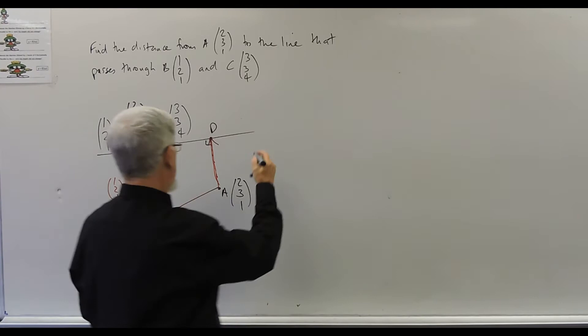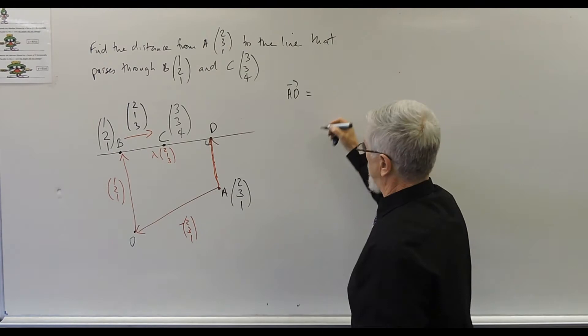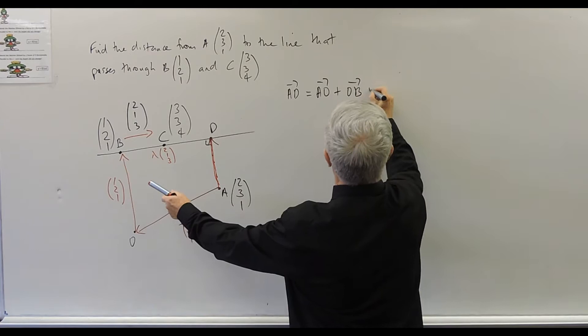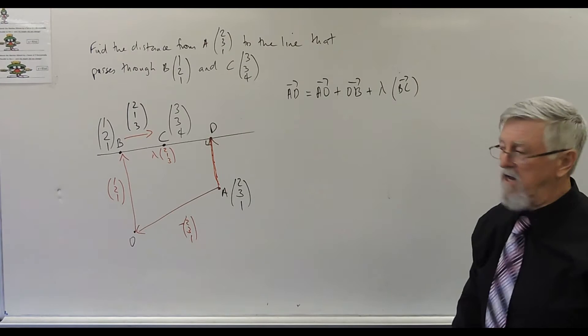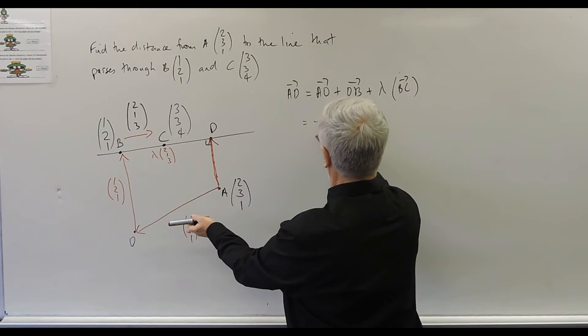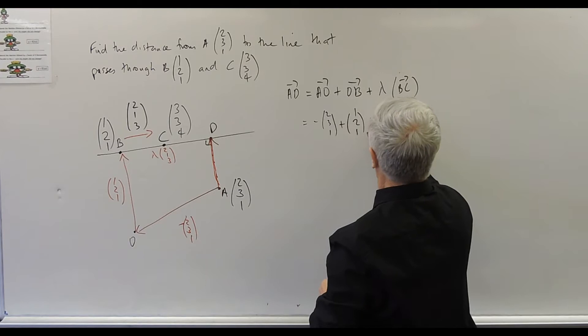So you can shortcut this like crazy, mate. To go from A to D, I'm going to actually write this for the sake of someone watching the video. I'm going to get AO plus OB plus a certain amount of BC. And that's our equation for AD. OB is 1, 2, 1. We don't know how many of those. And BC was 2, 1, 3.